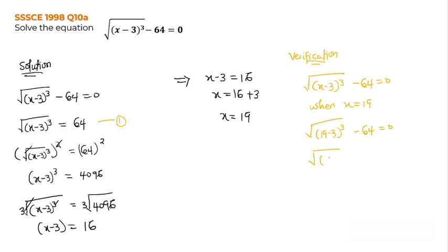So this equals 19 minus 3 gives me 16 cubed minus 64 equals 0. Now 16 cubed gives me 4096 minus 64 equals 0. The root of 4096 equals 64 minus 64 equals 0. So 64 minus 64 is 0 which equals 0.